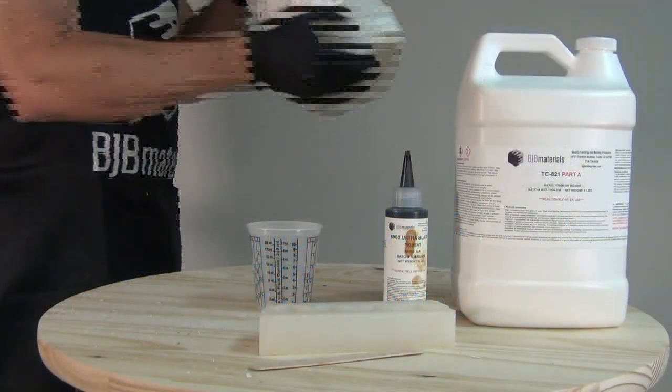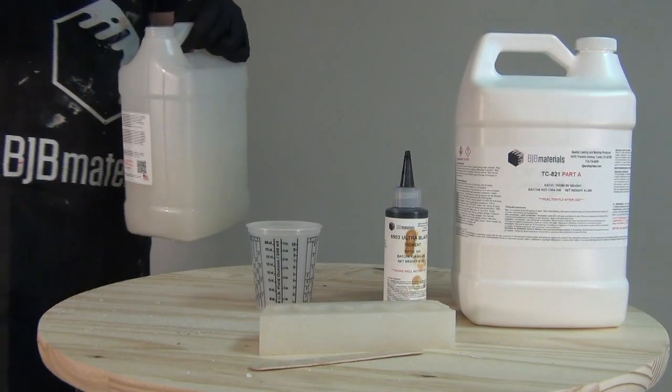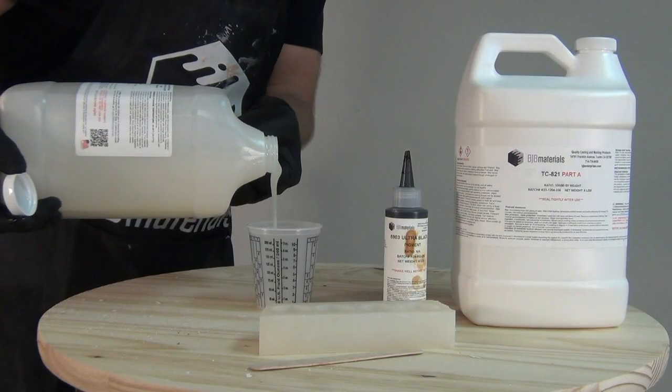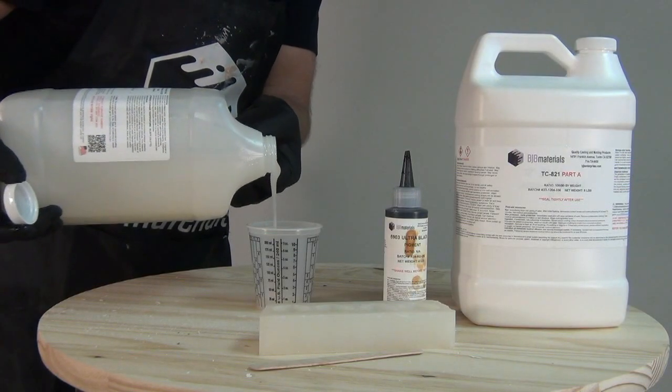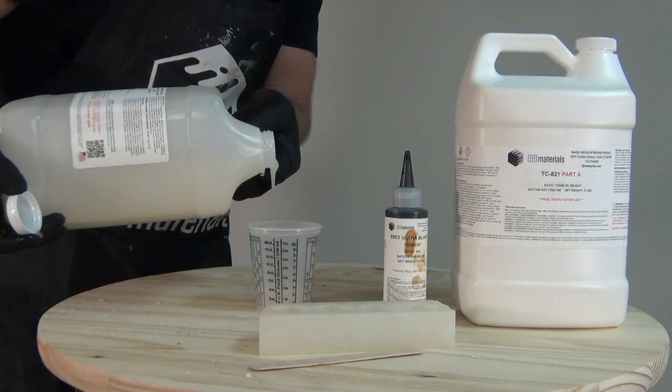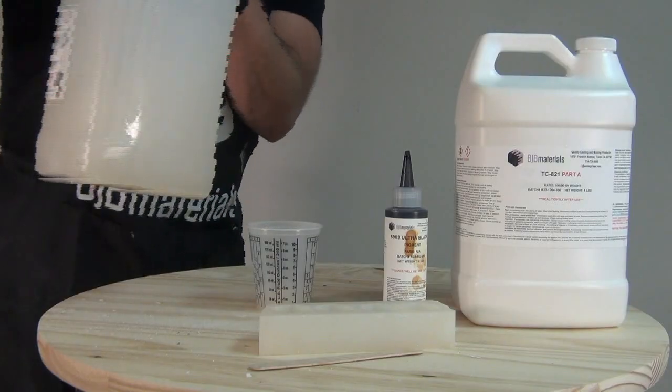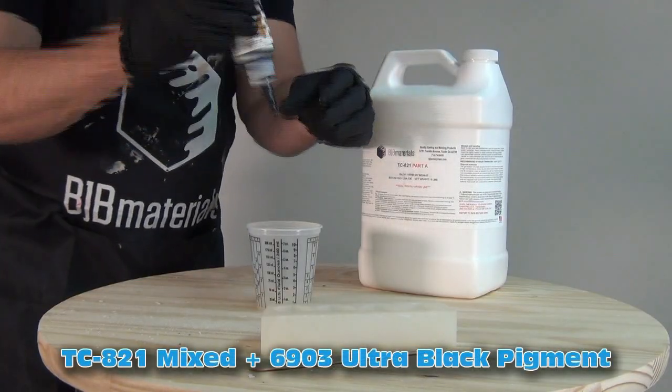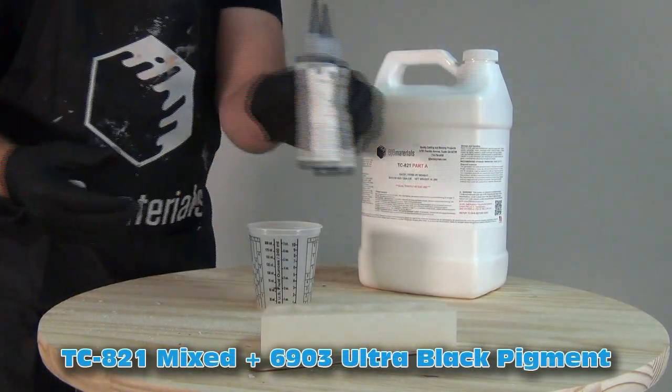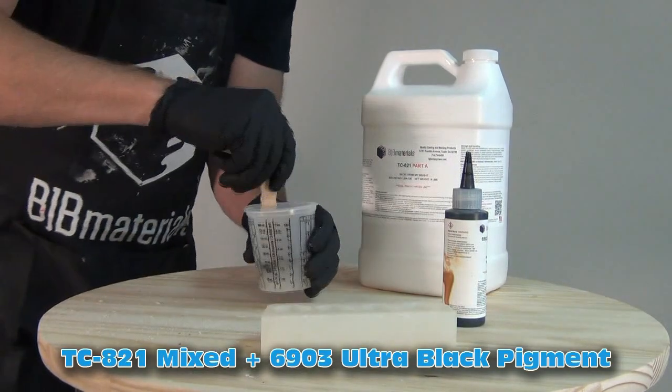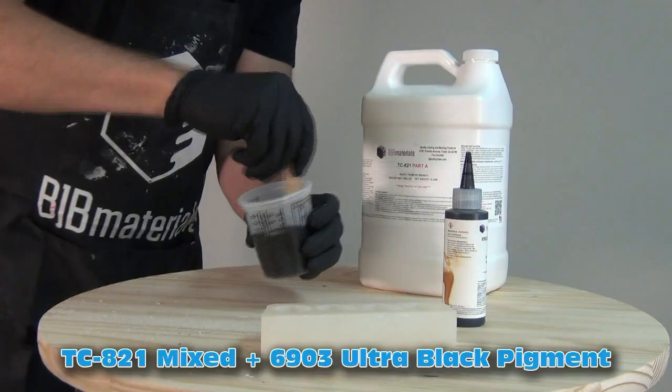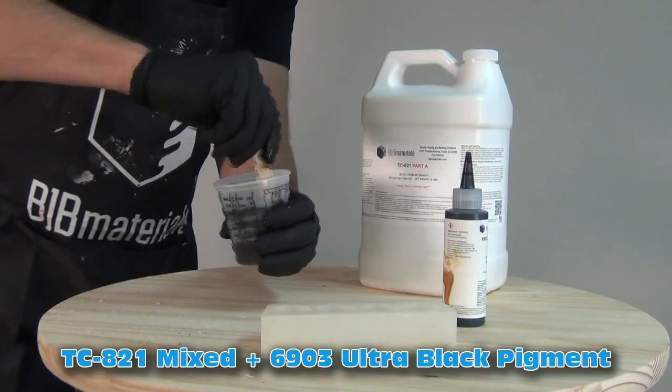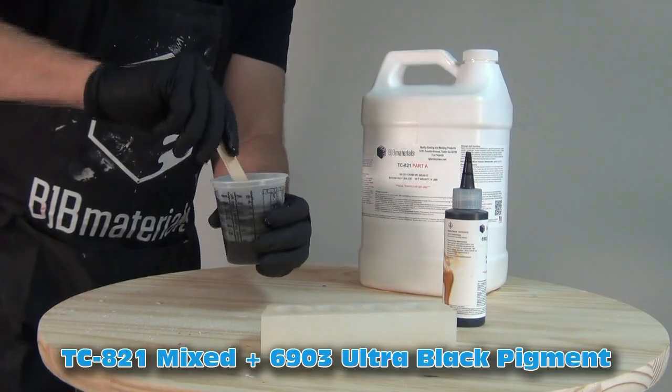Now for this first batch, I'm just going to mix up a small batch of the 821. That part B, you need to shake that before you dispense it, make sure all the magic particles are evenly dispersed. Because this has that very fast working time, I'm going to add some Ultra Black pigment just to the part B first, and that way I can get that well mixed into that B before I add the part A. Even though this does have a really fast working time, for smaller to medium sized projects that working time was actually ideal.